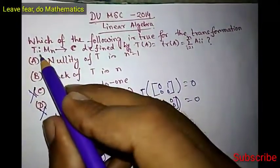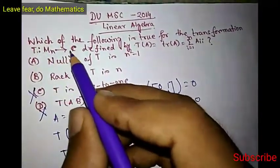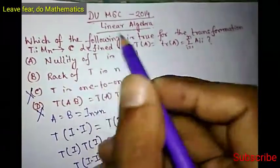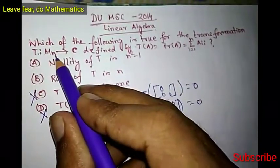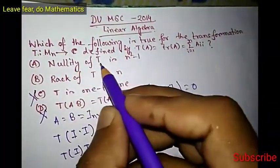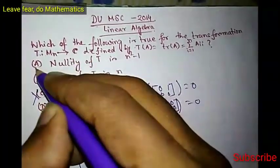So rank of T is not 0. Therefore, rank of T must be 1, because we have already mentioned that rank of T is either 0 or 1. So if rank of T is 1, then what is nullity? Nullity of T is n squared minus 1.